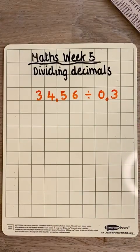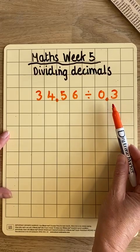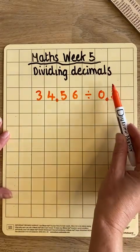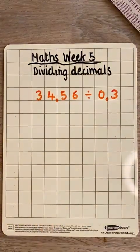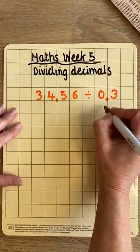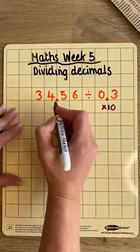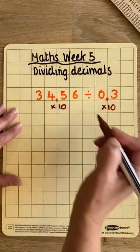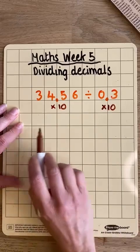Here's the same sum, 34.56 divided by 0.3. And again, we want to use that bus stop method, but because we're dividing by a decimal, we have a step to do before that. We need to turn this decimal that we're dividing by into a whole number. And to do that, we're going to times that by 10. And because we're timesing that one by 10, we have to do the same to our other number too. So we're going to times both of them by 10 to get a new sum.